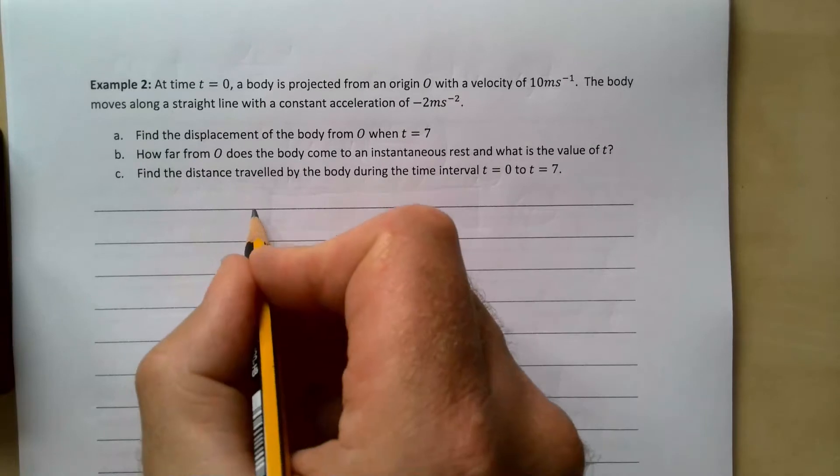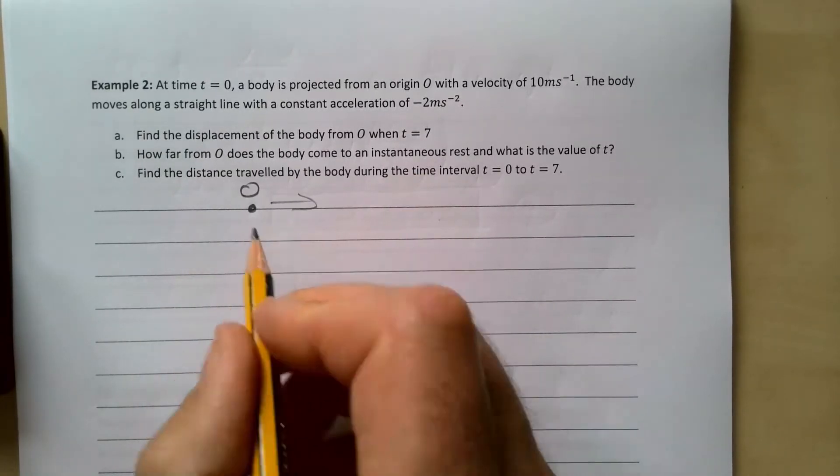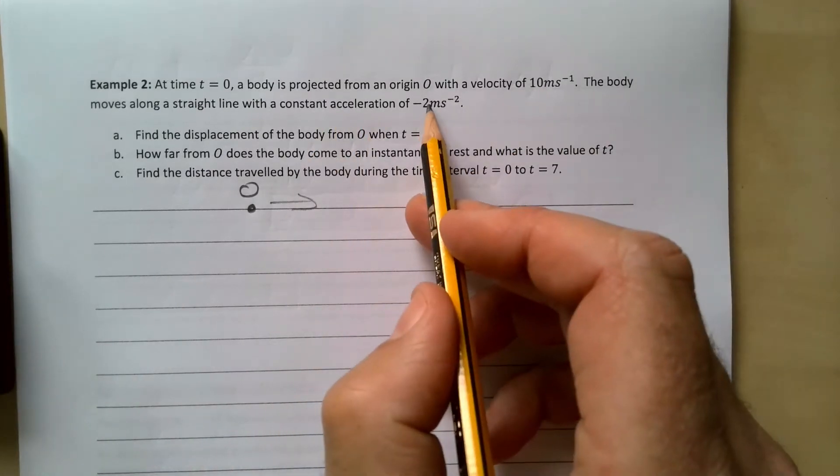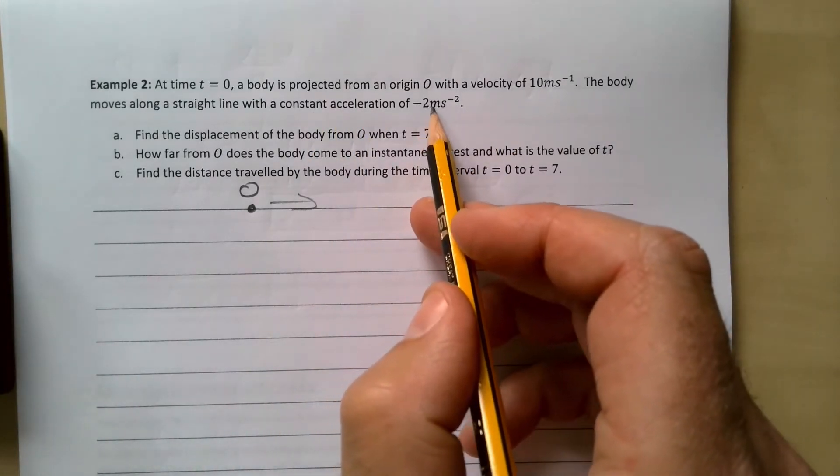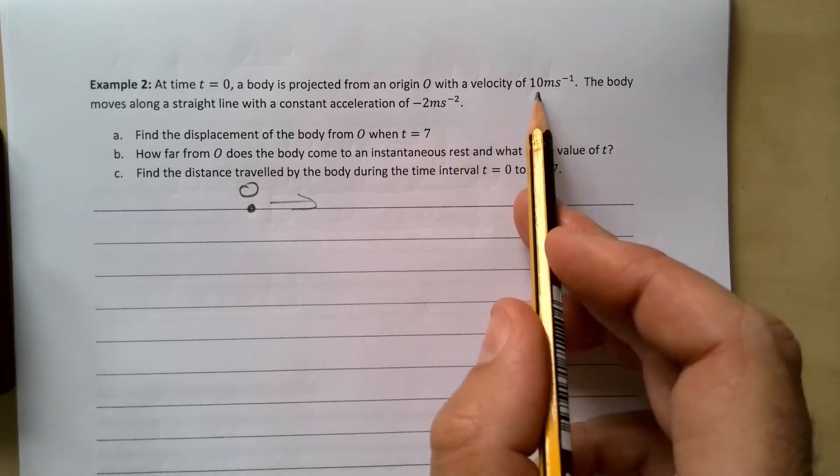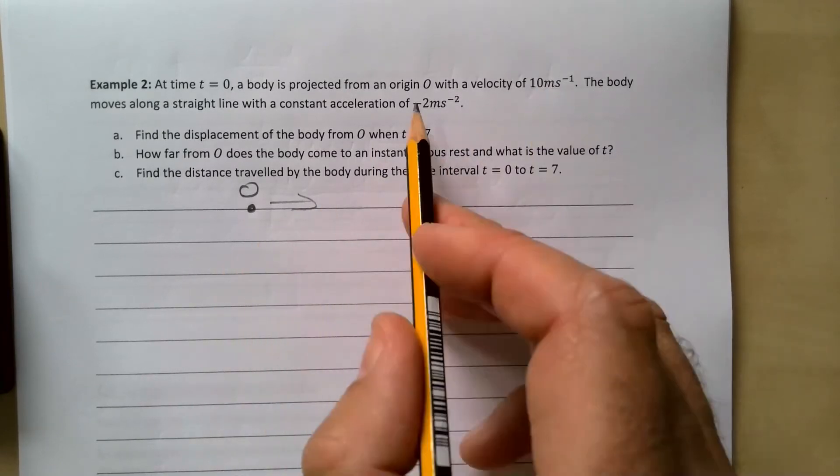So it starts here which is zero and it heads off this way at 10 meters per second. The acceleration is minus two, so it's a deceleration of two. What that means is every second it gets two slower. So after one second it's going to be going at eight, after two seconds it's going to be going at six, and so on.